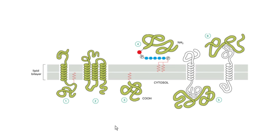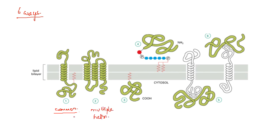Let's revise the most important topic of today's class. There are 6 ways in which membrane proteins are associated with the lipid bilayer. The most common is transmembrane proteins that extend through both lipid bilayers as a single helix or as multiple helices.